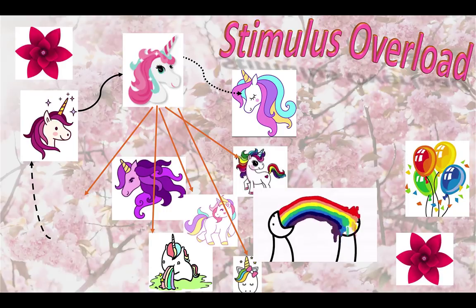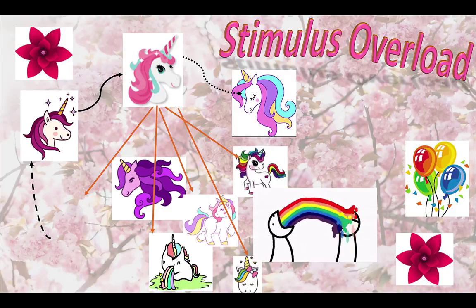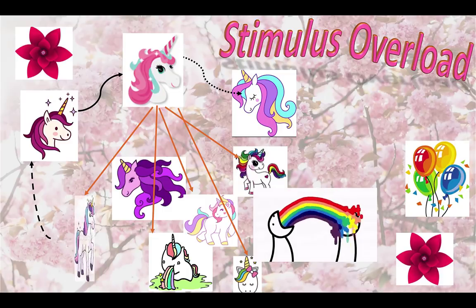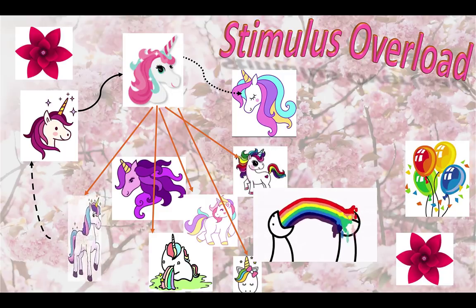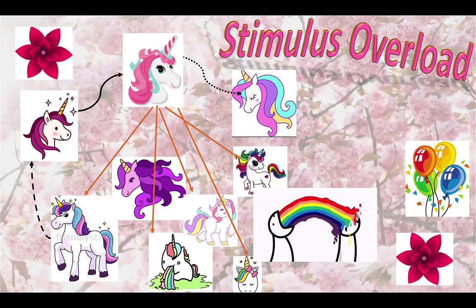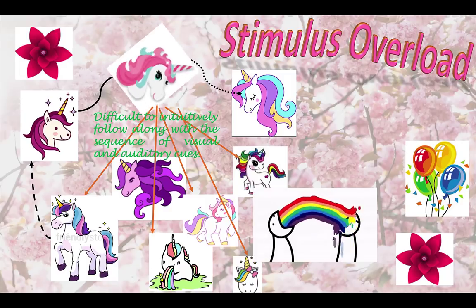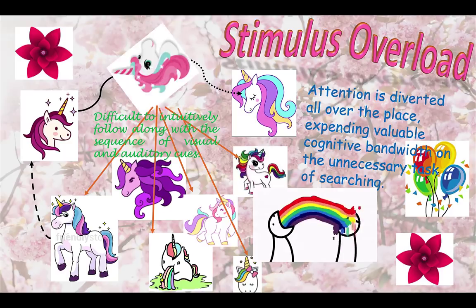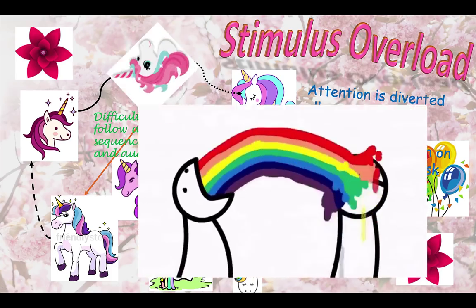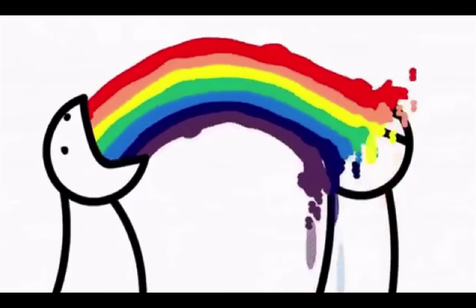The third mistake is the other extreme — too many stimuli of various colors and sizes because people think it's cute to put in animations for no reason, or to make things color-themed for no reason. The general principle is that everything you put in your presentation should have a purpose. Unnecessary stimuli waste the audience's cognitive bandwidth — visual and auditory — leaving less mental energy for what they really need to pay attention to. It's difficult to intuitively follow along with the sequence of visual and auditory cues when your eyes are roving all over. Also, try not to use Comic Sans unless you are teaching preschool. This visual vomit negates the value of the fundamentals you're trying to convey.